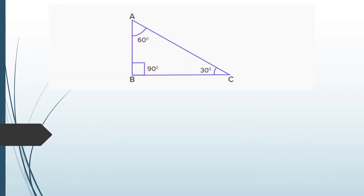In the 30-60 triangle, we have a theorem: in a right triangle, the length of the side opposite the 30-degree angle equals half the length of the hypotenuse. So if the hypotenuse is 2x, that shorter side is x. By applying the Pythagorean theorem — 2x squared minus x squared — and taking the square root, you get the third side as x√3.